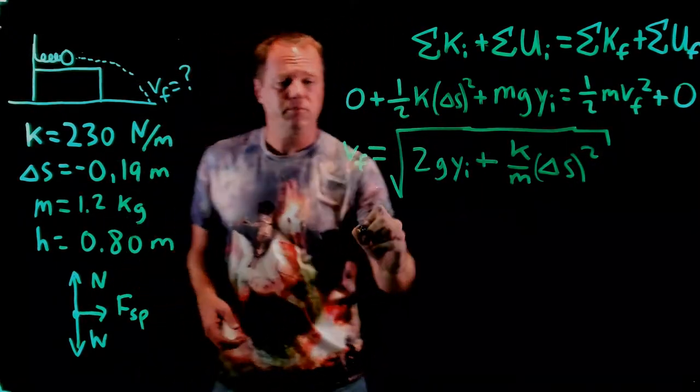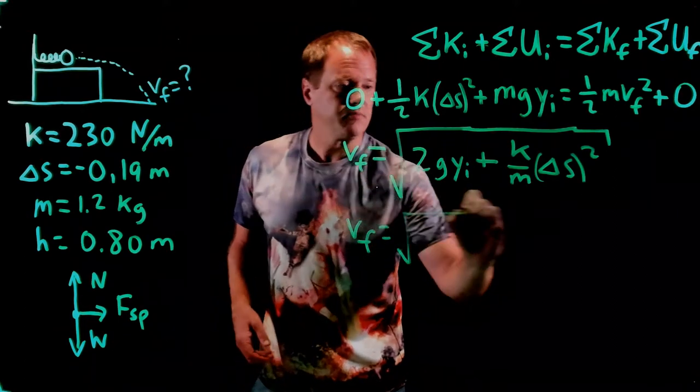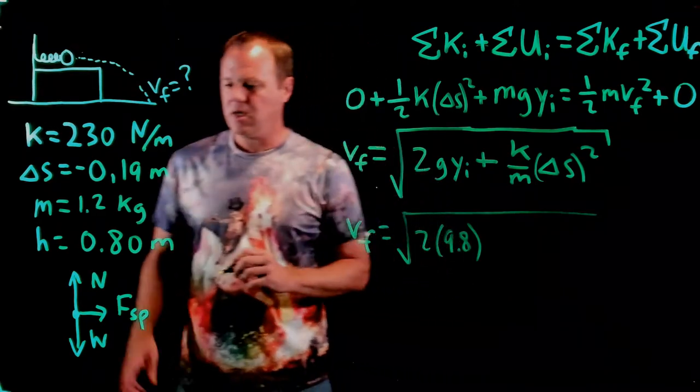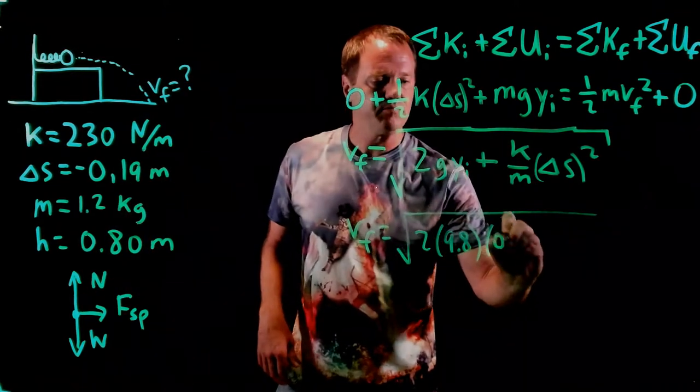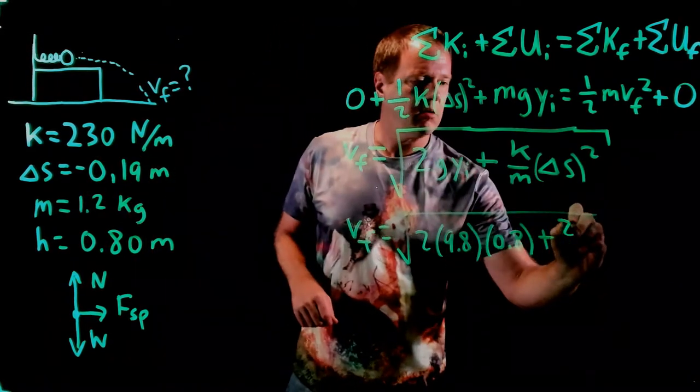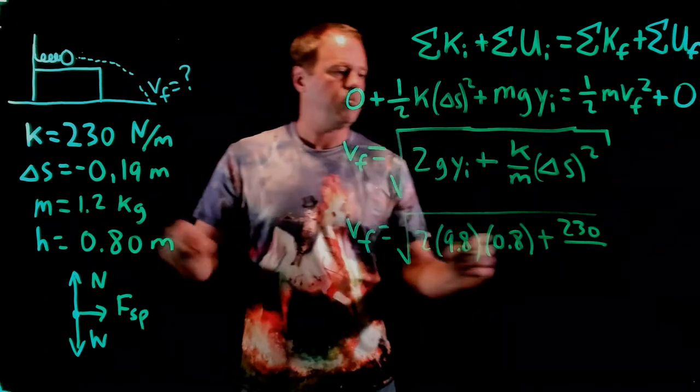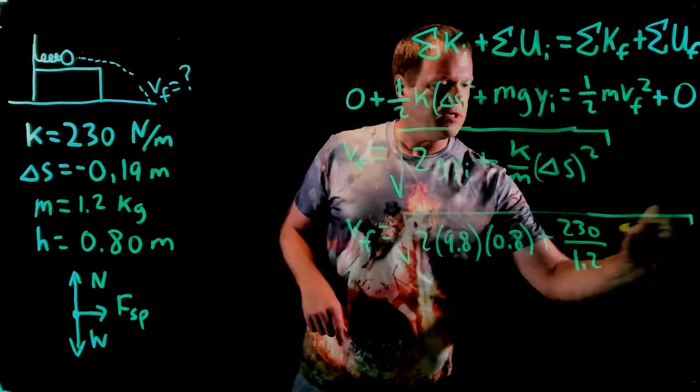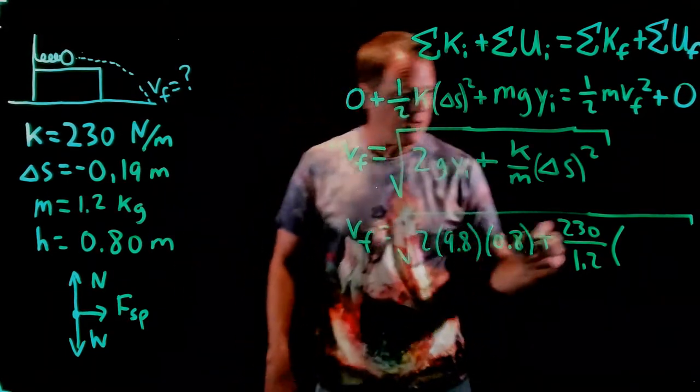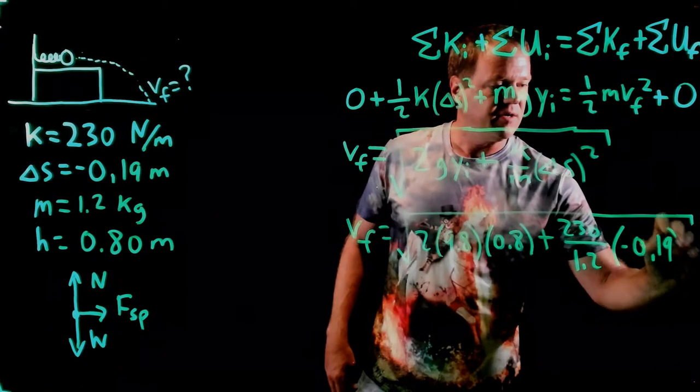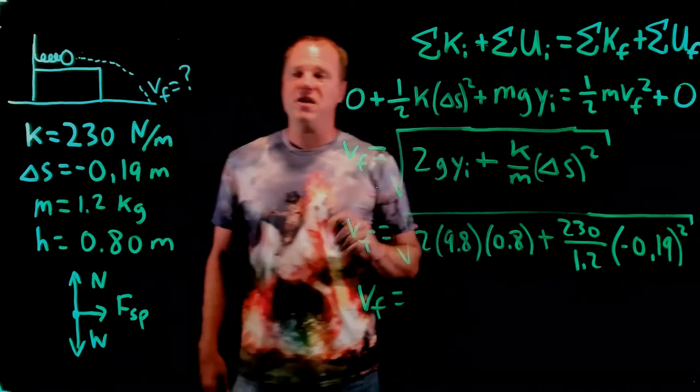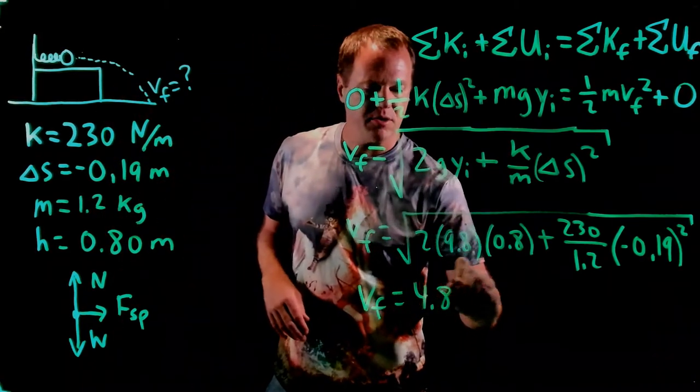Now I can throw in the numbers. So throw in positive 9.8 for g, initial height of 0.8 meters, spring constant of 230, mass of the object of 1.2 kilograms, and the displacement of 0.19 meters, or minus 0.19, and I square that. And I throw that into my calculator, and I predict that the speed of impact will be 4.8 meters per second.